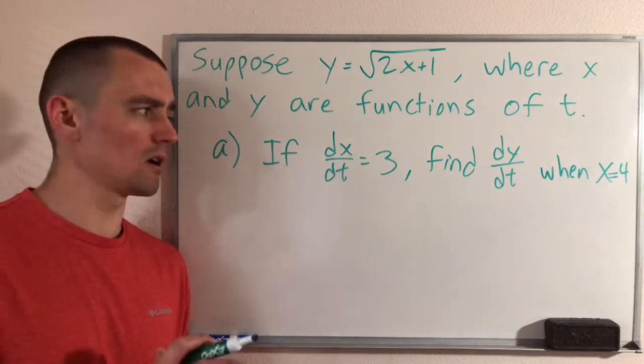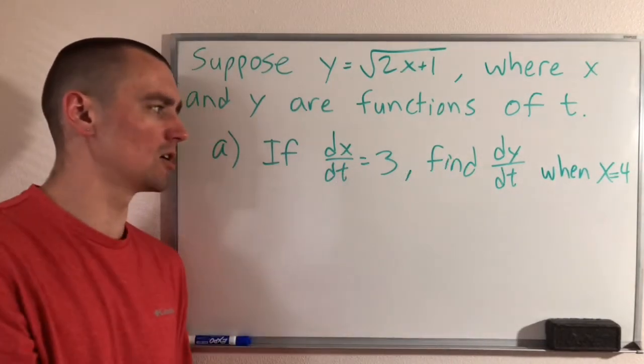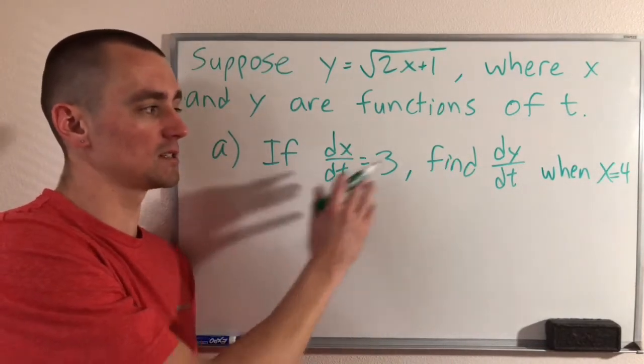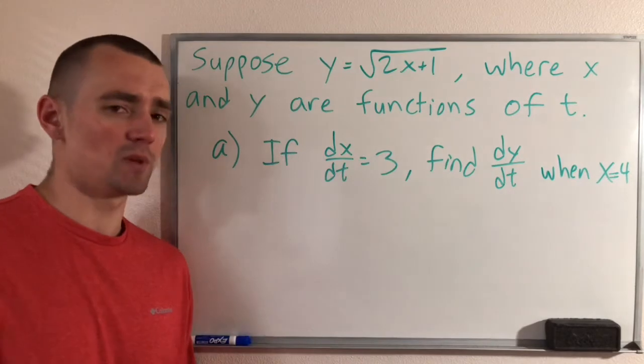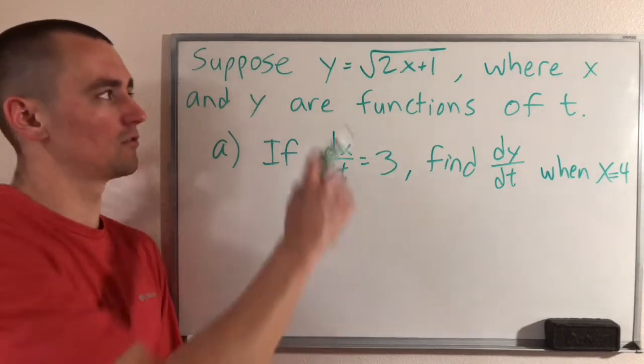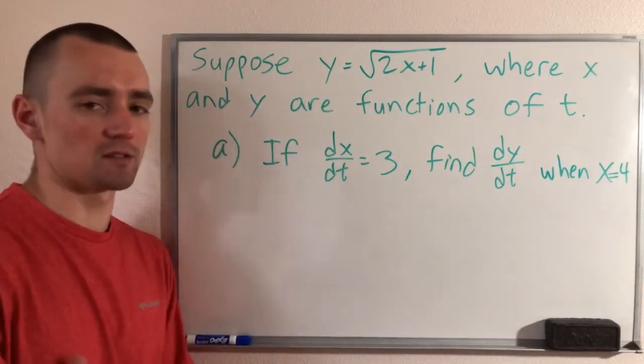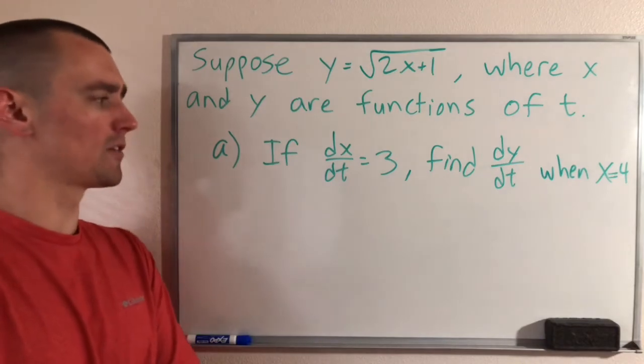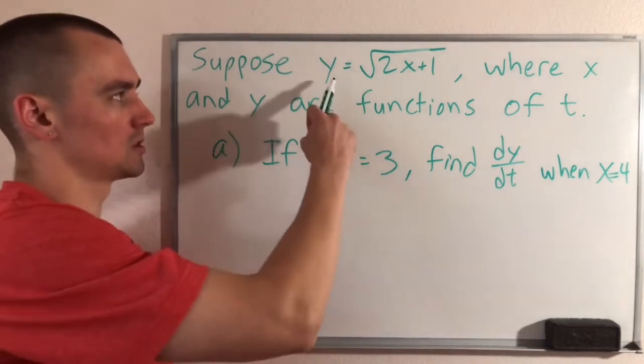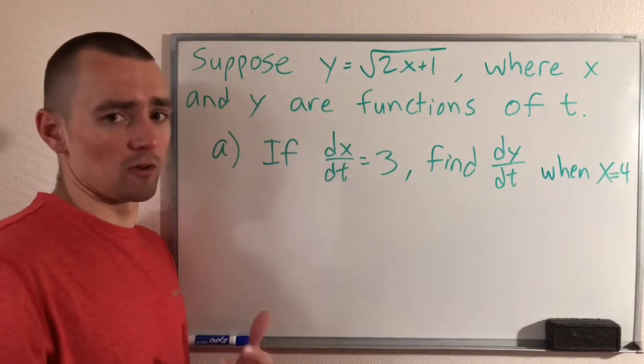So the best place to start, obviously we're looking for dy/dt here, we're given some information about x and dx/dt. Best place to start is just by taking the derivative with respect to t of both sides of this equation. Before we do that though, let's think about how we could rewrite this equation without a square root.